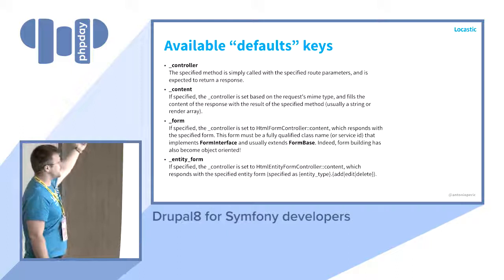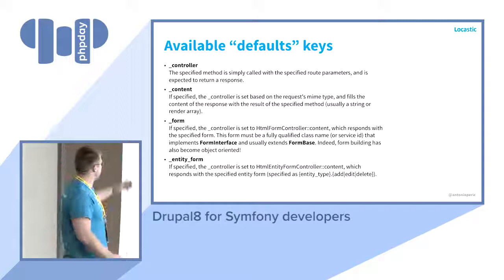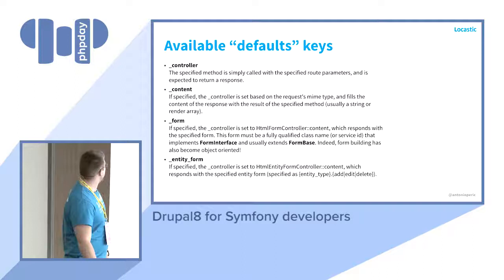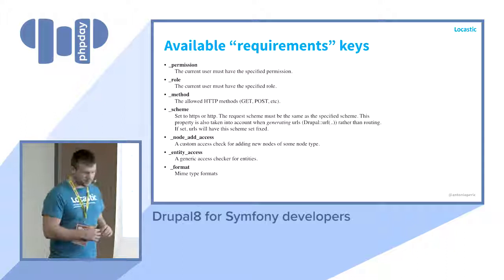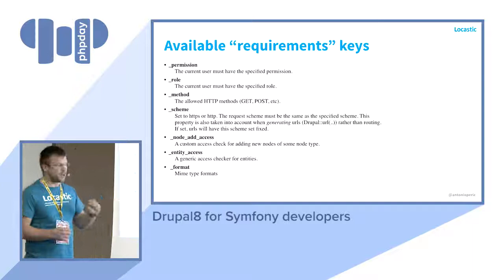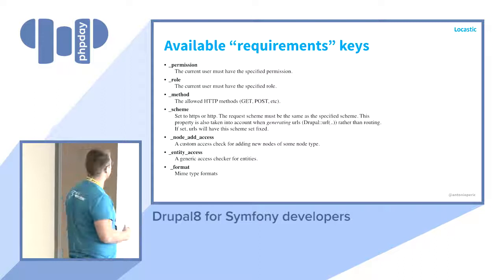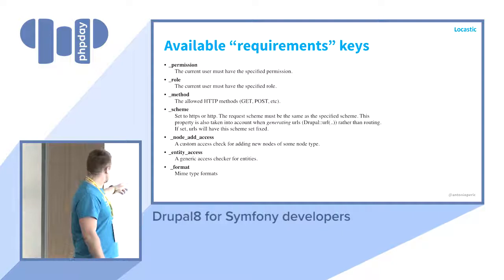Route fields: 'defaults' keys include controller, content, form, and entity form. 'Requirements' keys include permission, role, method, scheme, node access, entity access, and format. Permission means the current user needs access to the content. Role restricts to specific user roles. Method specifies allowed HTTP methods like GET, POST, PUT. Scheme sets HTTPS or HTTP. Node access and entity access check access for nodes/entities. Format specifies what mime type to return to the user.